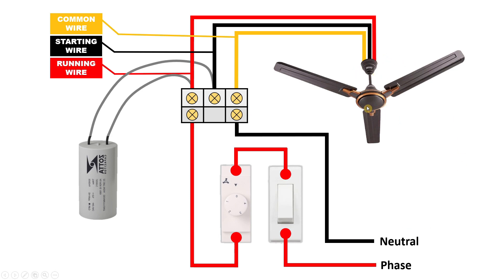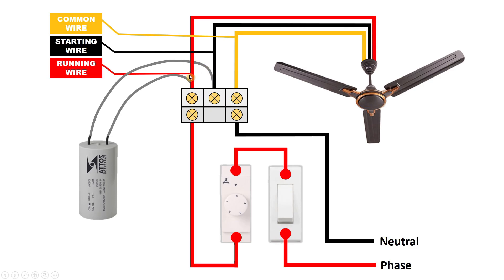Now suppose the direction of the ceiling fan is opposite. To make the direction proper, take the phase supply and connect it to the starting wire terminal instead. Disconnect the red wire from its terminal and connect it to the other terminal, and disconnect the black wire and connect it to the other terminal. We interchange these two wires so that the direction of our ceiling fan changes.